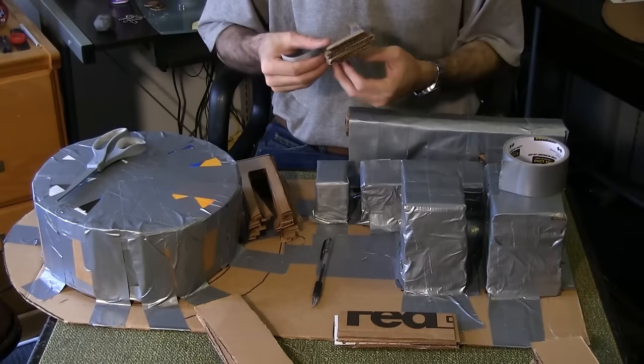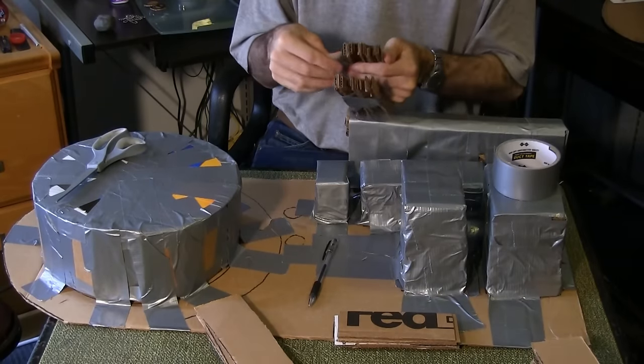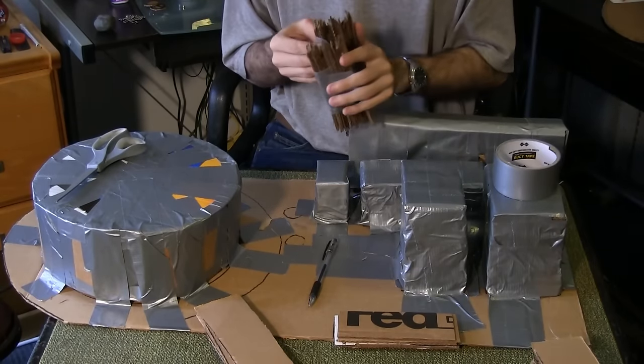Tape the U shapes together on both sides, a few at a time. Combine the sets, and wrap the entire thing in duct tape.